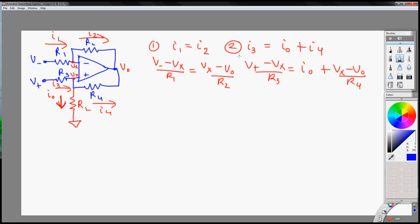Okay, and to make this thing easier to write, we see that these two are the same. So let's call Vx minus Vout be A. So let A be Vx minus Vout. And we can rewrite the equation as A over R2, equal to V minus minus Vx over R1. And then over here we have A over R4, plus I0 is equal to V plus minus Vx over R3.